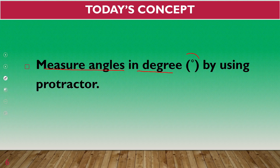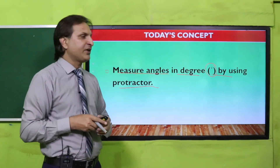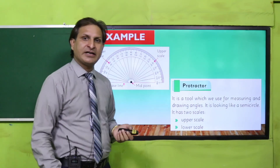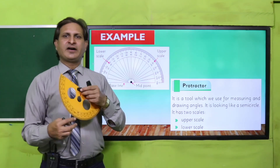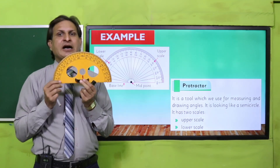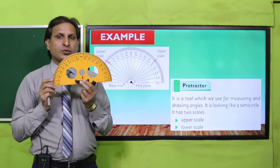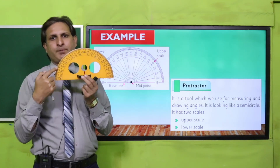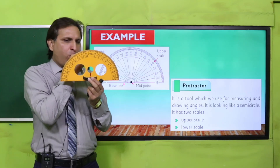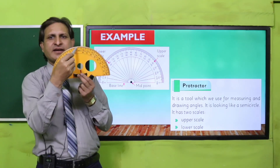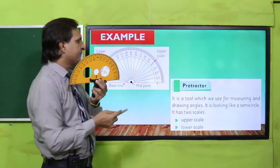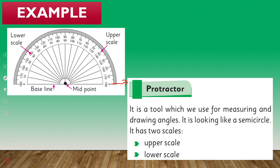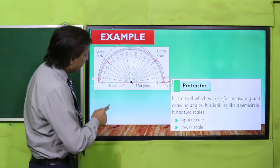Measure angles in degrees by using the protractor — protractor ko use karte hue humne degrees mein angles ko measure karna hai. Yeh protractor aapke paas dekhein — this is the protractor, is tarah D-shape ka protractor aapki geometry box mein available hoga. Aur usme upar ki taraf circle mein numbers likhe honge jo upper boundary ke side pe numbers likhe honge — usko hum upper scale bolenge. Jo ke aapke is side se start hota hai, upper scale is side se start hoga aur upar ki taraf 0 se lekar 180 tak numbers honge.